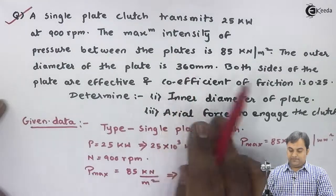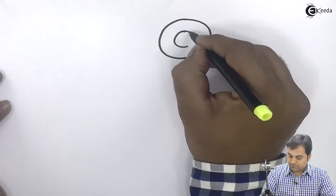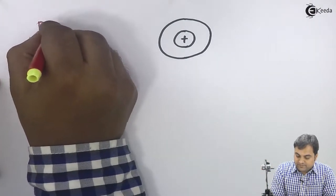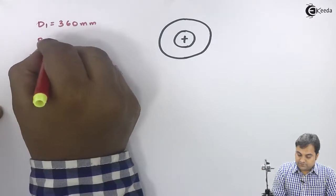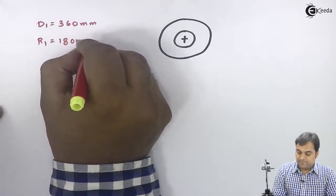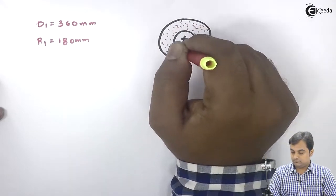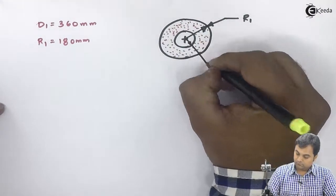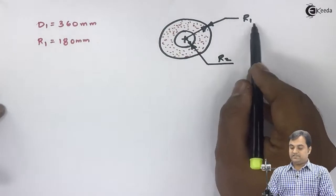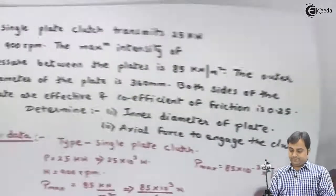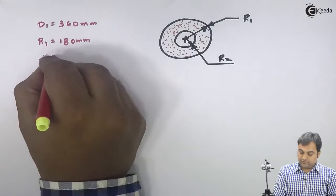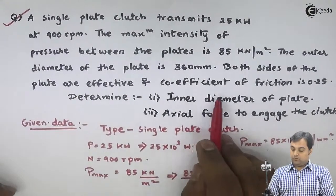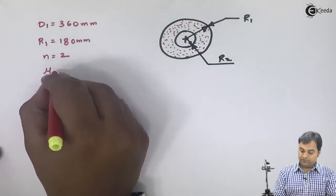The outer diameter of the plate is 360 mm. Outer diameter D1 is 360 mm, therefore R1 becomes half of 360, that is 180 mm. So outer radius R1 is 180 mm. It is given that both the sides of the plates are effective, meaning N equals 2 number of effective sides. Then coefficient of friction mu is equal to 0.25.